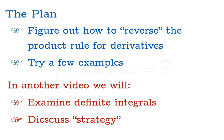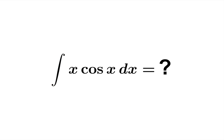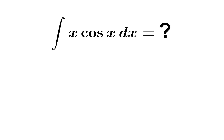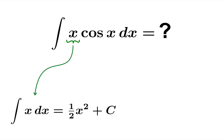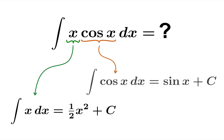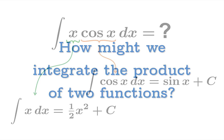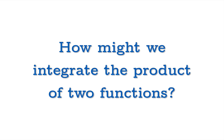So a great example is: what is the anti-derivative of x cosine x? We obviously know how to integrate x, and we obviously know how to integrate cosine. So the question is, given the ability to integrate one or the other of a product, how might we integrate the product of two functions?